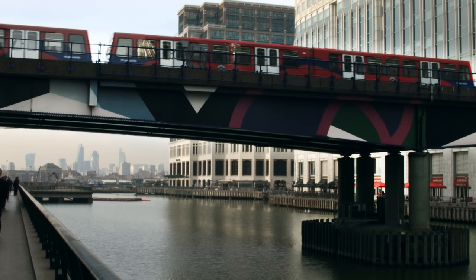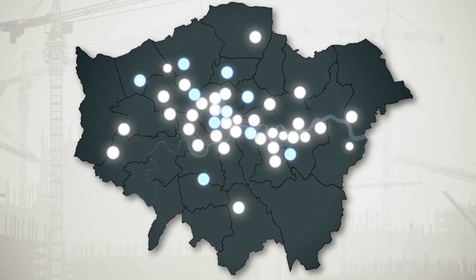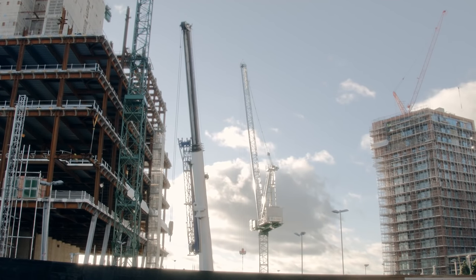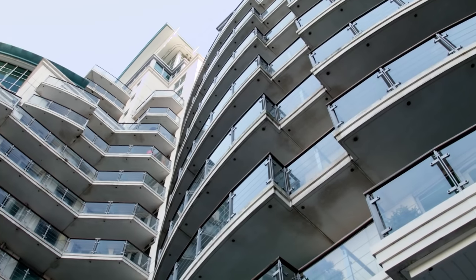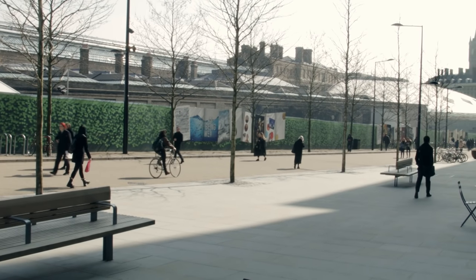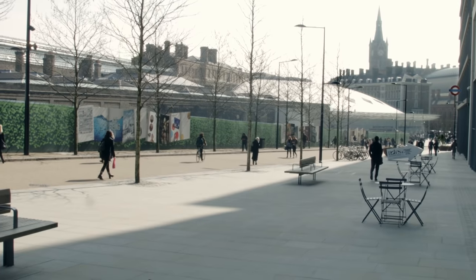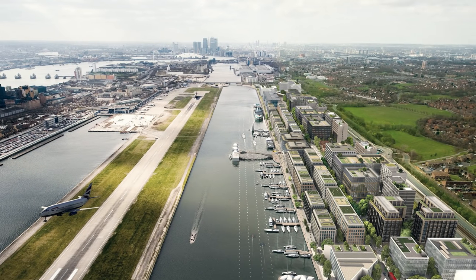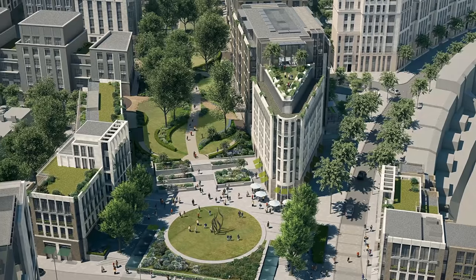In order to facilitate this policy, the mayor has designated 38 opportunity areas, each with significant capacity to accommodate at least 5,000 jobs or 2,500 new homes. Each one is sited close to places with good public transport accessibility. Examples of opportunity areas are found right across the city, such as at Royal Docks, Elephant and Castle and Earl's Court.